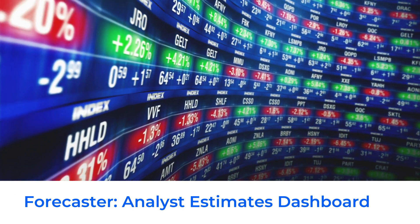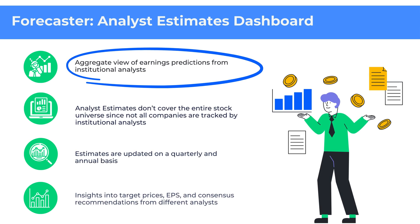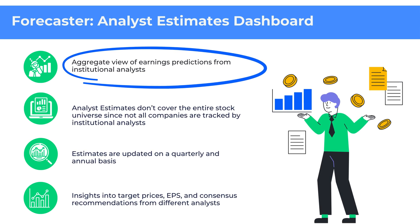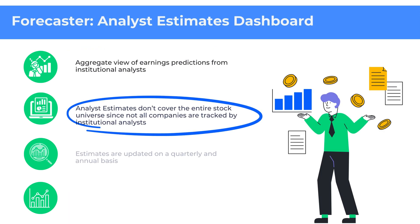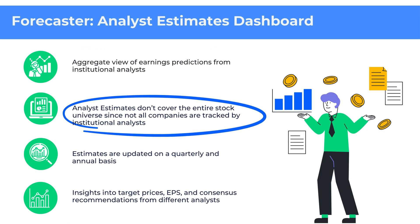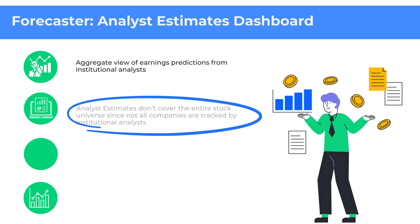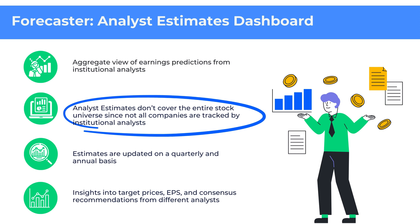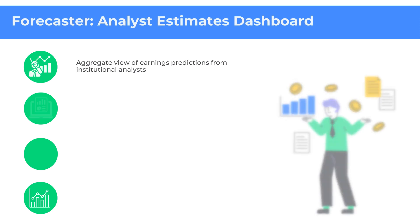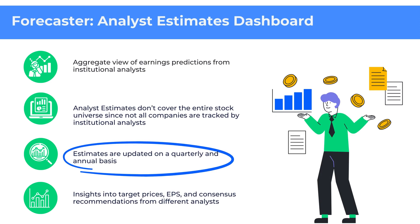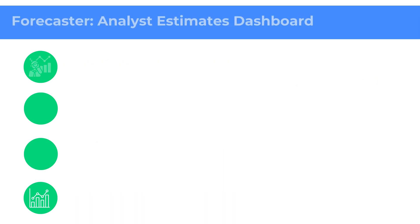Next, let's take a look at the Forecaster or Analyst Estimates dashboard available on the platform. Trendline's Forecaster and Analyst Estimates dashboard offers a complete view of earnings estimates from institutional analysts for approximately 900 companies. Analyst estimates don't cover the entire stock universe since not all companies are tracked by institutional analysts. Generally, analysts focus on larger companies rather than smaller ones, since the top 500 companies represent 95% of the market cap in the stock exchanges. These estimates are updated on a quarterly and annual basis as analyst calls come in.